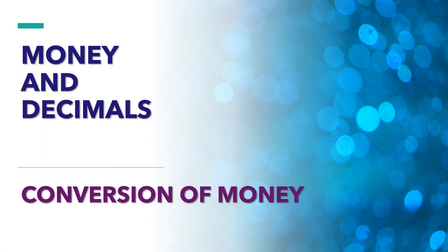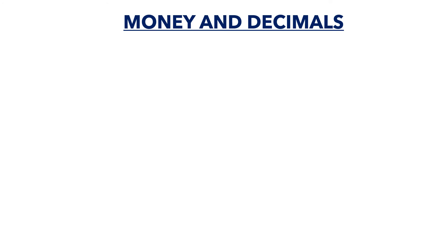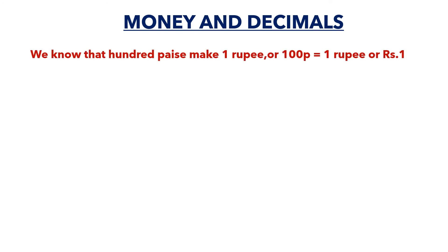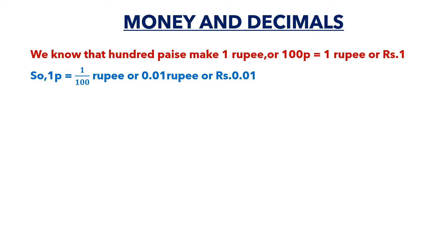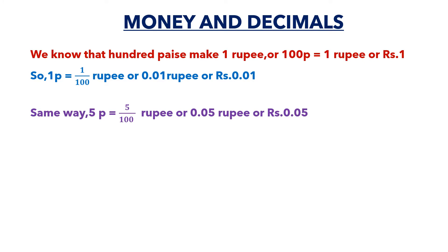Hello everyone, welcome back to my channel. In this video, 'Money and Decimals', we are going to study the conversion of money. We know that hundred paise make one rupee, meaning there are hundred paise in a rupee. So one paise is equal to one upon hundred rupees, which we can write as zero point zero one rupees.